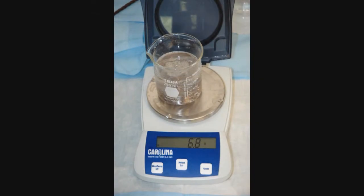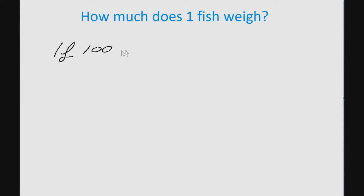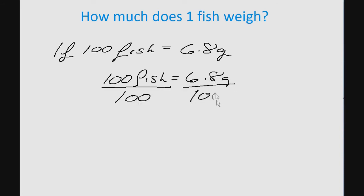In this example, 100 fish weigh 6.8 grams. We need to calculate how much one of our fish weighs on average. Divide both sides by 100. We calculate one fish weighs 0.068 grams.